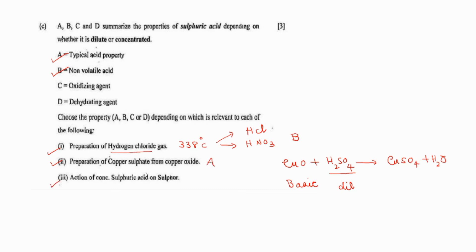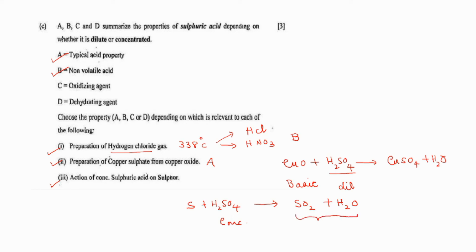Action of concentrated sulfuric acid on sulfur: when sulfur is treated with concentrated sulfuric acid, one product will be sulfur dioxide and another product will be water. When sulfuric acid reacts and produces sulfur dioxide and water, concentrated sulfuric acid is showing oxidizing property. Answer is C — oxidizing agent.